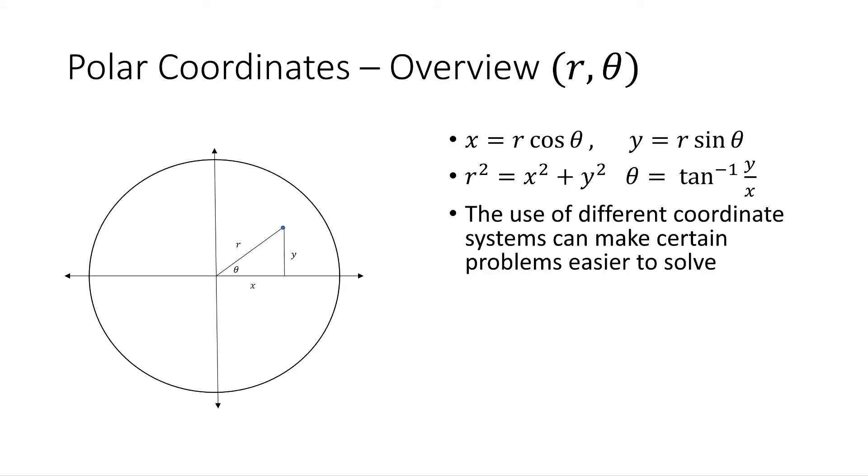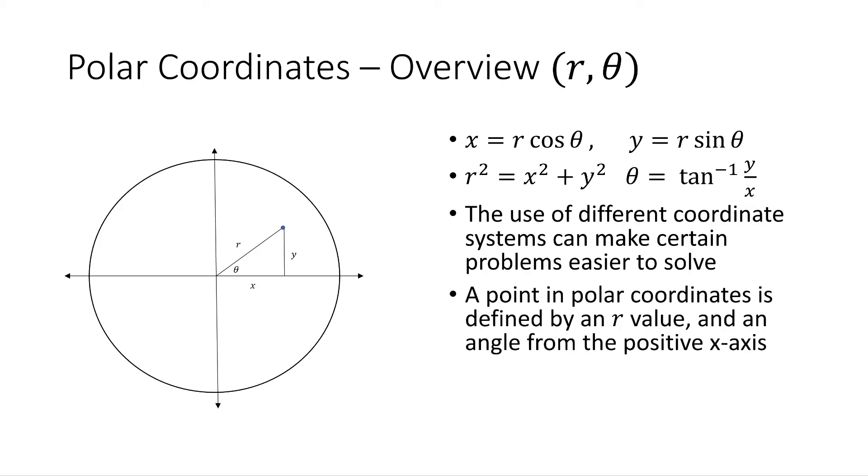So the reason we use polar coordinates is the fact that it makes certain problems easier to solve. When working with circles, it's much easier to think of polar coordinates than it is to think of Cartesian coordinates. And in doing so, we can define each of those points in polar coordinates with r and an angle from the positive axis of theta. So this allows us to work on different problems and just be more efficient with it.